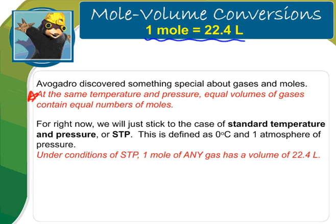For right now, we'll just stick to the case of standard temperature and pressure, or STP. This is defined as zero degrees Celsius and one atmosphere of pressure. Under conditions of STP, one mole of any gas has a volume of 22.4 liters. So this is your third conversion factor that we've learned.